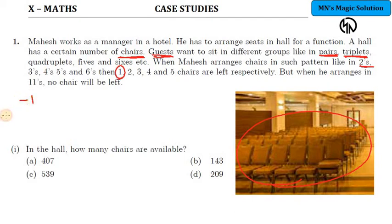Three chairs are extra when arranging in fours. Four chairs are extra when arranging in fives. And five chairs are extra when arranging the chairs in groups of six chairs in each group. So when arranging in any group, a specific number of chairs are left out.